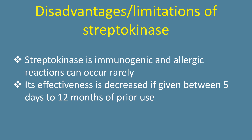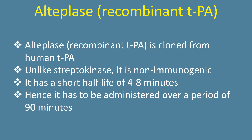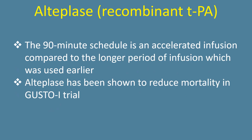Its effectiveness is decreased if given between 5 days to 12 months of prior use. Alteplase is cloned from human TPA. Unlike streptokinase, it is non-immunogenic. It has a short half-life of 4 to 8 minutes. Hence, it has to be administered over a period of 90 minutes. The 90-minute schedule is an accelerated infusion compared to the longer period of infusion used earlier.